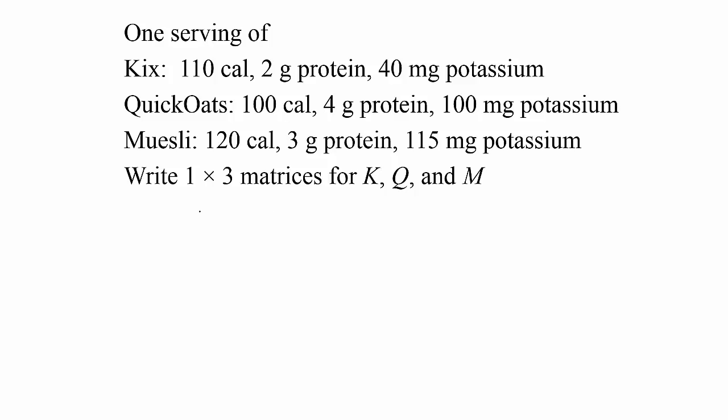Here's one example. They have nutrition label data for three breakfast cereals: Kix, Quick Oats, and Muesli. They want us to write a 1 by 3 matrix for each cereal that represents the nutrition content. We could write K equals [110, 2, 40], and Q for Quick Oats equals [100, 4, 100]—that's 100 calories, 4 grams of protein, and 100 milligrams of potassium.